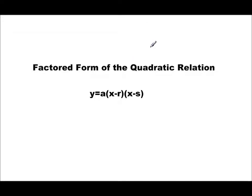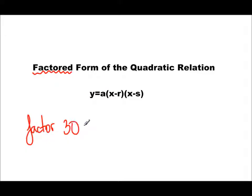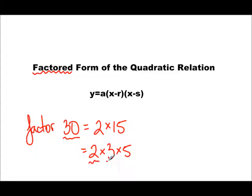Today we're going to talk about how we can work with a different form of the quadratic relation called the factored form. The reason it's called factored form is because, just like factoring the number 30 into 2 times 3 times 5, we're breaking things down into factors multiplied by each other. So some factors multiplied by each other — that's why it's called the factored form.